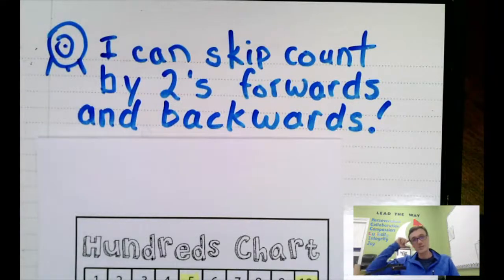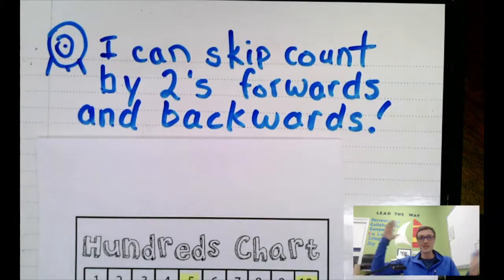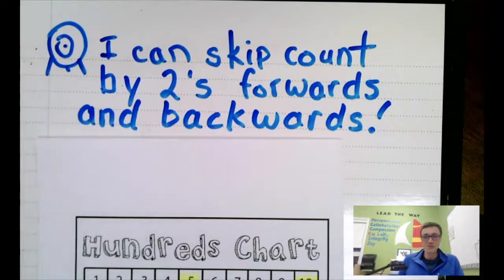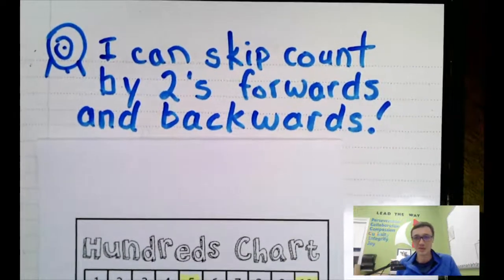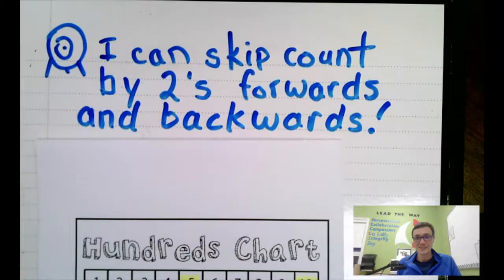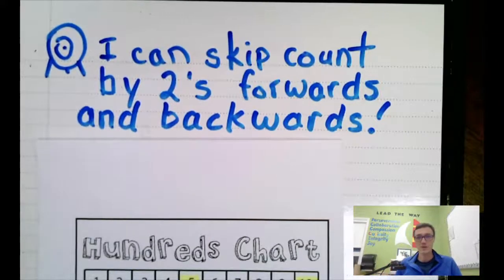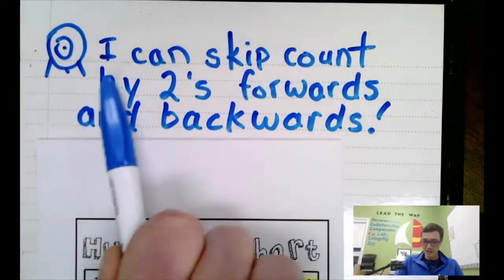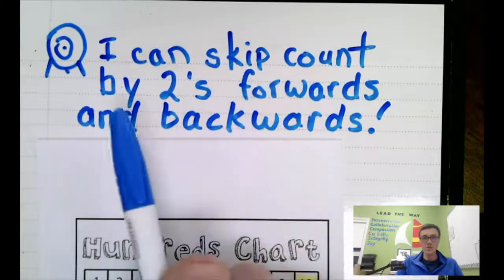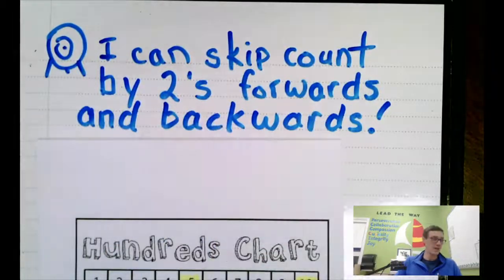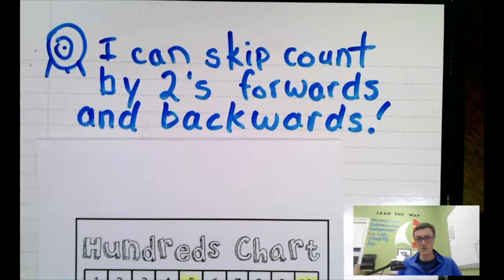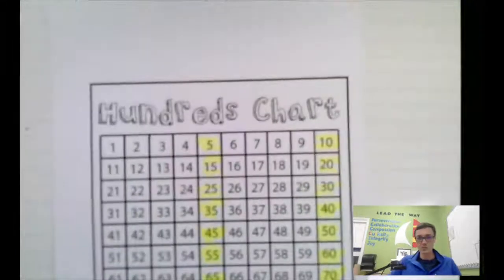Hello, grade one mathematicians. Today I learned how to do something new so I thought I might try it. I learned how to have two pictures going at once. So you can see my face and at the same time you can see what we are talking about. And what we're talking about today is I can skip count by twos forwards and backwards. So let's work on that. We'll do a bit of practice.